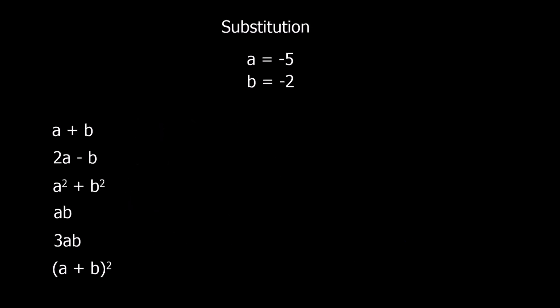With substitution, the biggest mistakes people make are with negative numbers. So here in this example, I've got A is negative 5 and B is negative 2. When we're going to do this, we're going to remember the rules of multiplying negative numbers. A positive times a positive gives a positive answer. A positive multiplied by a negative gives a negative answer. A negative multiplied by a positive is a negative answer. And a negative multiplied by a negative is a positive answer.